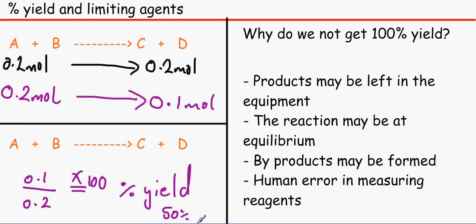To give us our percentage yield, in this case it is 50%. Now the thing is, although I didn't say it, this reagent here is in excess.